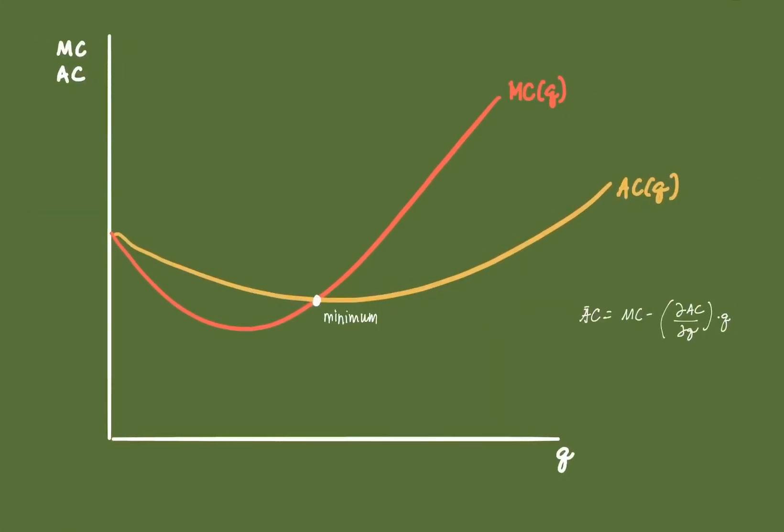So notice first, for the range of Q wherein the cost function we had earlier was concave, you'll notice that from this point until this point, MC is decreasing. In this output, you'll notice that AC is also decreasing.